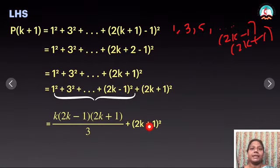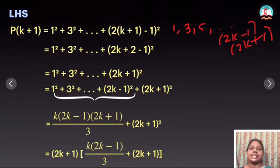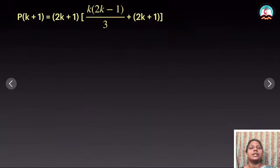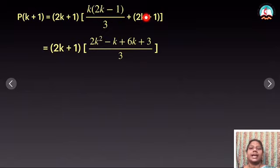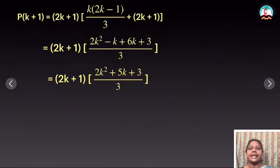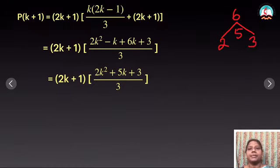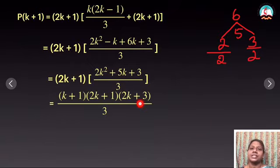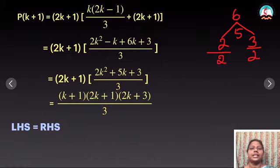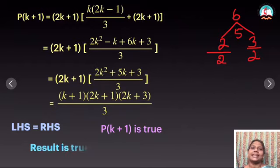From these two terms, shall we take (2k+1) outside? Taking that as common, then taking LCM — multiplying by 3 — I get a quadratic expression in the numerator. Simplifying: 2×3=6, getting 5, and cancelling terms, I get (k+1)(2k+1)(2k+3)/3. That is my RHS. Since LHS equals RHS, P(k+1) is true. Therefore the result is true for all values of n greater than or equal to 1.